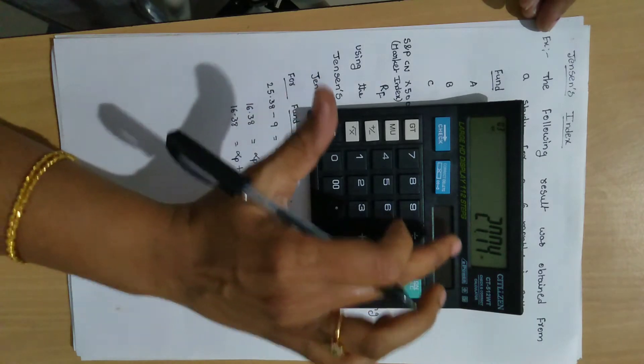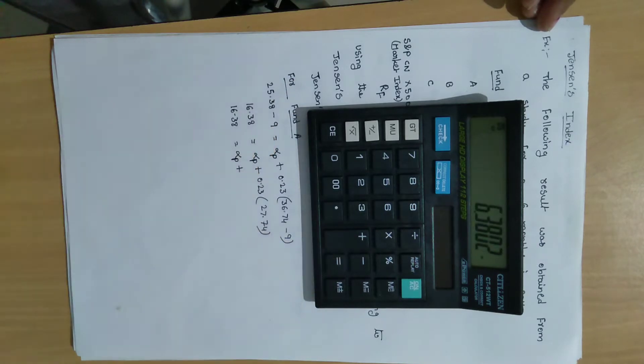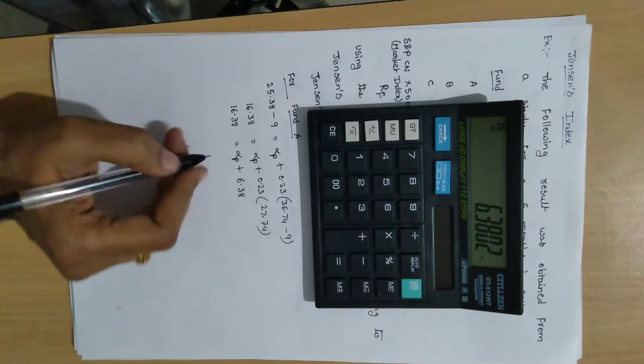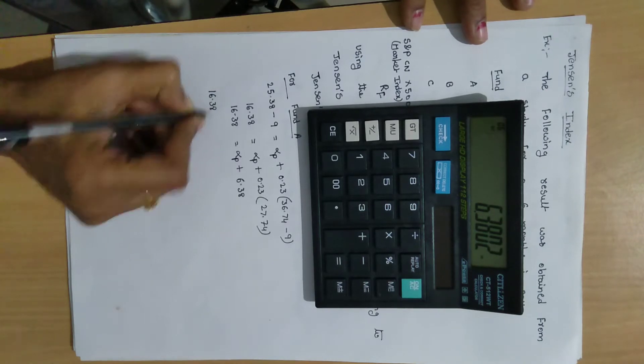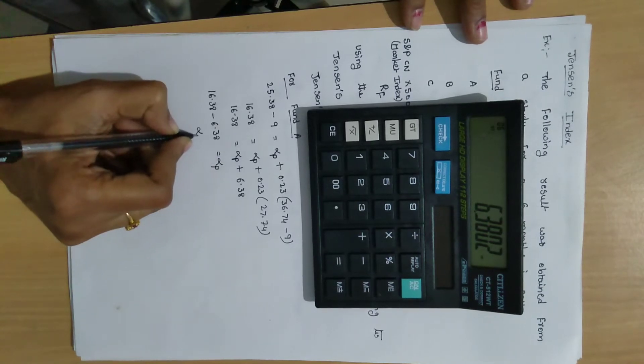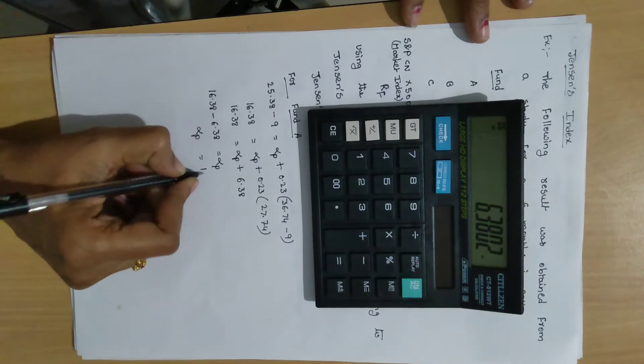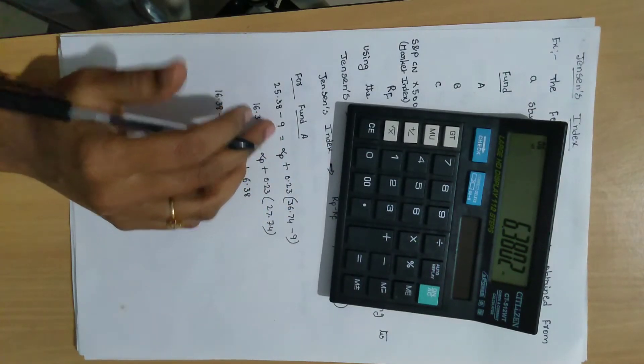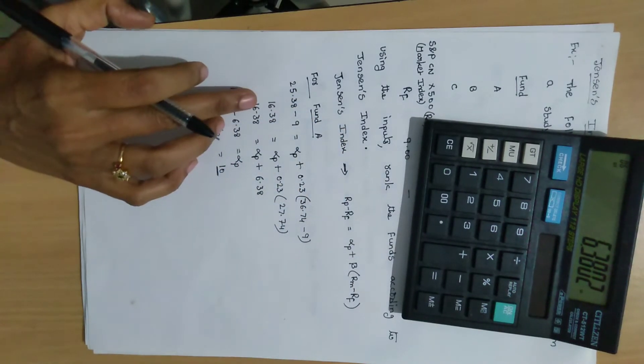25.38 minus 9 equal to 16.38. 16.38 equal to alpha P plus 0.23 into 36.74 minus 9. 27.74 into 0.23 then 6.38. So 16.38 minus 6.38 equal to alpha P. Then alpha P equal to 10. So this is the alpha value of fund A.